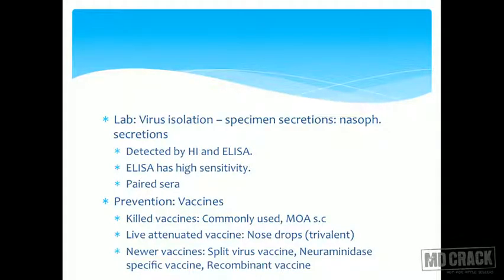For lab investigations, virus isolation is done from nasopharyngeal specimens. Tests used include the hemagglutination inhibition (HI) test and ELISA. ELISA is more sensitive than HI. Paired sera can be used, and a four-fold rise in antibody titer is taken to be of diagnostic value.